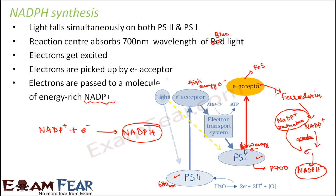In summary: as light falls on PS1, the low energy electrons gain sufficient energy and get excited. They are picked up by the electron acceptor FES, move on to ferredoxin, and from ferredoxin go to NADP+. NADP+ accepts the electron and becomes NADPH, with the enzyme NADP reductase facilitating the conversion. For your information, NADPH is a very energy-rich molecule — one NADPH is capable of producing three ATP molecules.